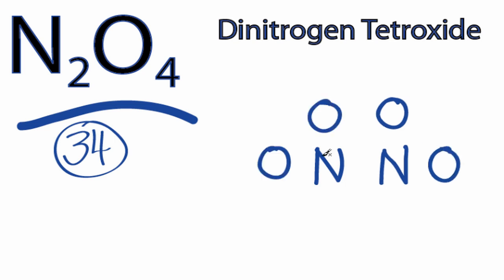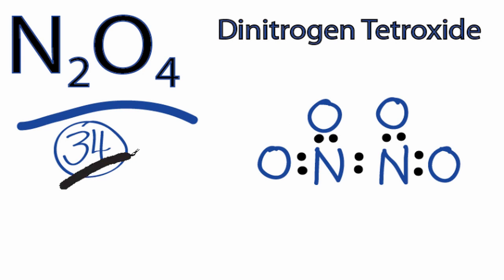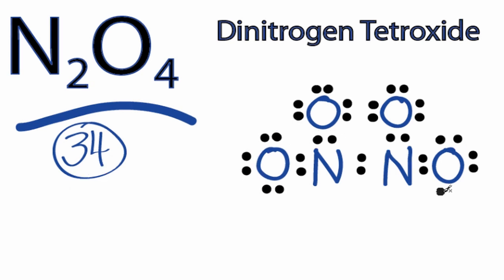We have four oxygens. We'll put valence electrons between atoms to form chemical bonds, and then we'll go around the outside and complete the octets on the oxygens until we use all 34 valence electrons — counting up to 34. So we've used all 34 valence electrons that we started with, and we have the octets filled on the oxygens.